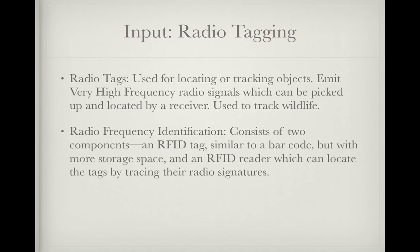Radio tagging: radio tags are used for locating or tracking objects. They emit very high frequency (VHF) radio signals which can be picked up and located by a receiver. They are used to track wildlife such as endangered animals. Radio frequency identification (RFID) consists of two components: an RFID tag, similar to a barcode but with more storage space, and an RFID reader which can locate these tags by tracing their radio signatures over a small to medium distance.